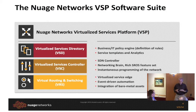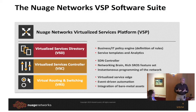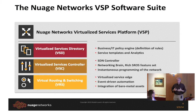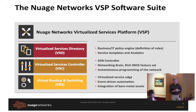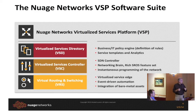The Nuage solution has three components. At the top, we have the virtualized services directory — our policy server, which holds the policy and provides APIs for end users or cloud management systems to update it. We have the controllers, which receive policy, calculate how it has to be enforced, and implement it in the forwarding plane. And we have the VRS — the virtual routing and switching engine — which is the actual forwarding plane, either a virtual switch in a hypervisor or a physical switch that supports encapsulation or virtualization.